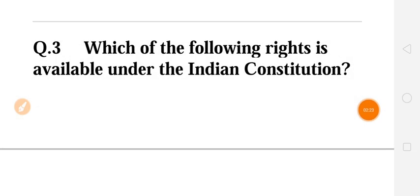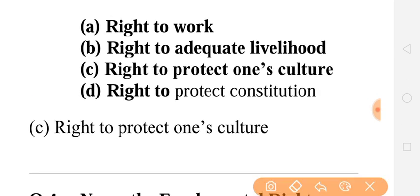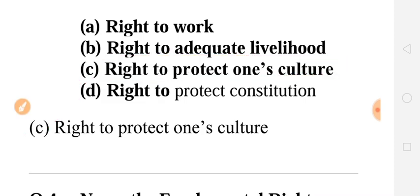The next question is: which of the following rights is available under the Indian Constitution? The answer is C: right to protect one's culture. Culture is what we follow — for example, in your religion, going to a temple or a mosque is your culture. So you can protect your culture; this is our right.